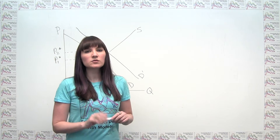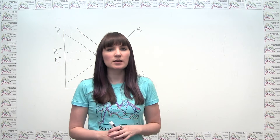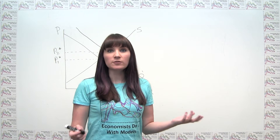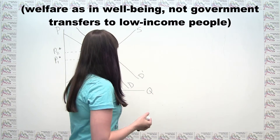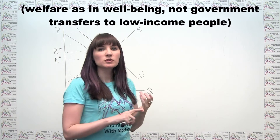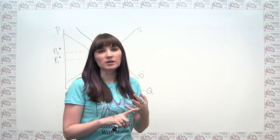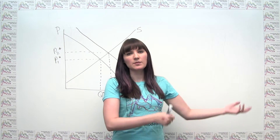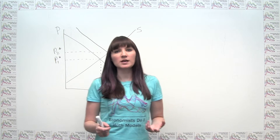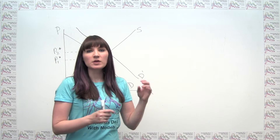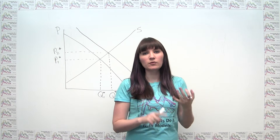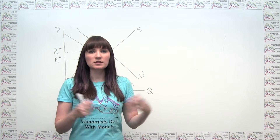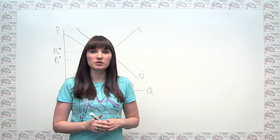One thing that's really helpful when analyzing changes in producer and consumer surplus is to draw what's called a welfare table. Our welfare table is going to show consumer surplus and producer surplus. If there were other parties involved — a government, or an impact on everybody else — we would add those in too. Then we can have columns for before and after, and think explicitly about the change in consumer and producer surplus.